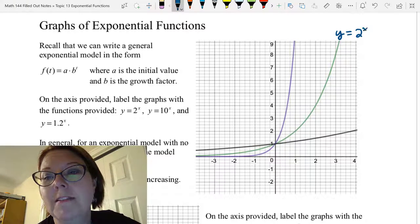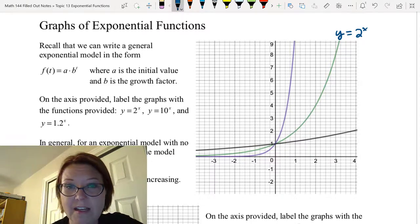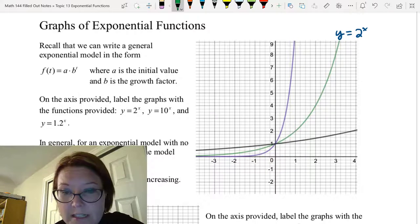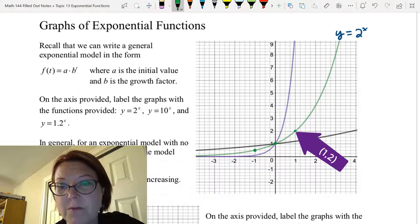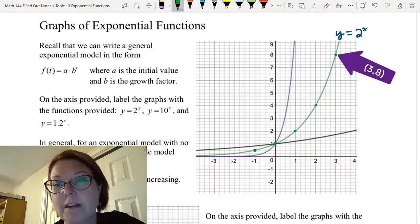The middle graph there is y equals 2 to the x, and if we wanted to place some points we had points at negative 1 comma 1 half, 0 comma 1, 1 comma 2, 2 comma 4, and 3 comma 8.